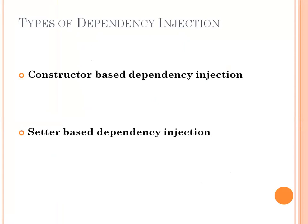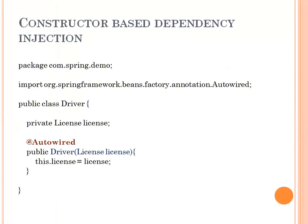First we will see constructor-based dependency injection. If you see this Driver class, it has a dependency on a License reference. When we create the Driver object we are passing the License reference into the constructor, and we are denoting this to the IOC container by using the @Autowired annotation over the constructor. This is called constructor-based dependency injection.